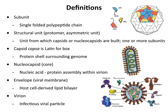Here are some important definitions. A subunit is a single folded polypeptide chain that makes up a virus. In a virus particle, blue, yellow, and red proteins with VP names are subunits — single proteins folded up in a certain way that make up the viral capsid. The structural unit, also called the protomer or asymmetric unit, is the unit from which capsids or nucleocapsids are built. It is made up of one or more subunits. So you put one or more subunits together, and you get a structural unit. In a diagram, the structural unit would be one blue, one yellow, and one red subunit.